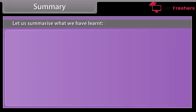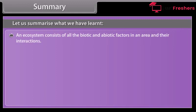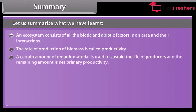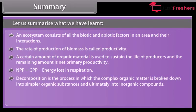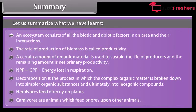Summary. An ecosystem consists of all the biotic and abiotic factors in an area and their interactions. The rate of production of biomass is called productivity. A certain amount of organic material is used to sustain the life of producers and the remaining amount is net primary productivity. NPP is equal to GPP minus energy lost in respiration. Decomposition is the process in which complex organic matter is broken down into simpler organic substances and ultimately into inorganic compounds. Herbivores feed directly on plants. Carnivores are animals which feed or prey upon other animals.